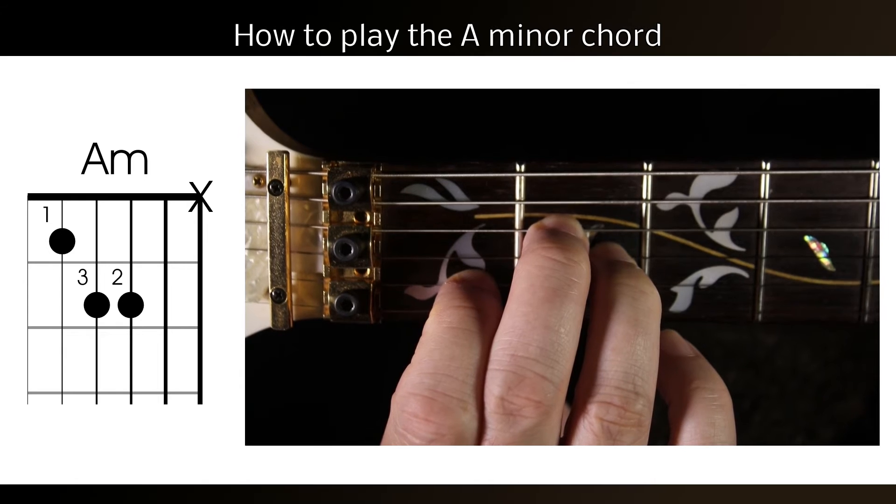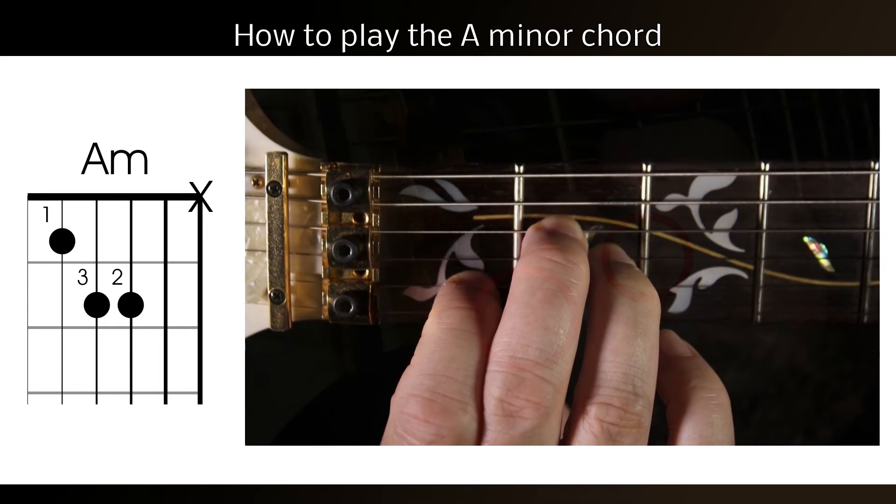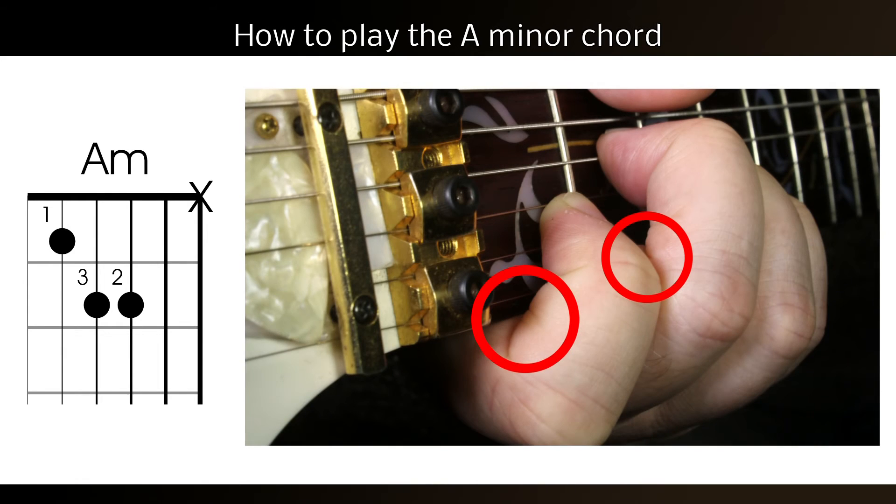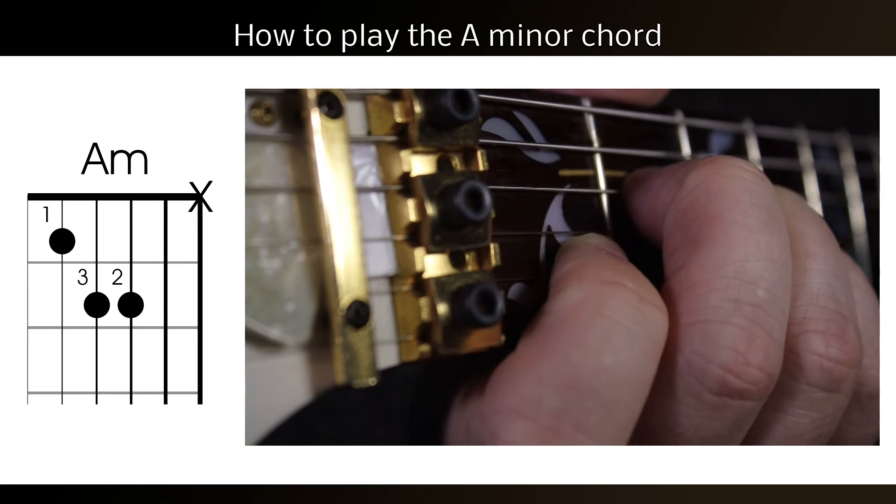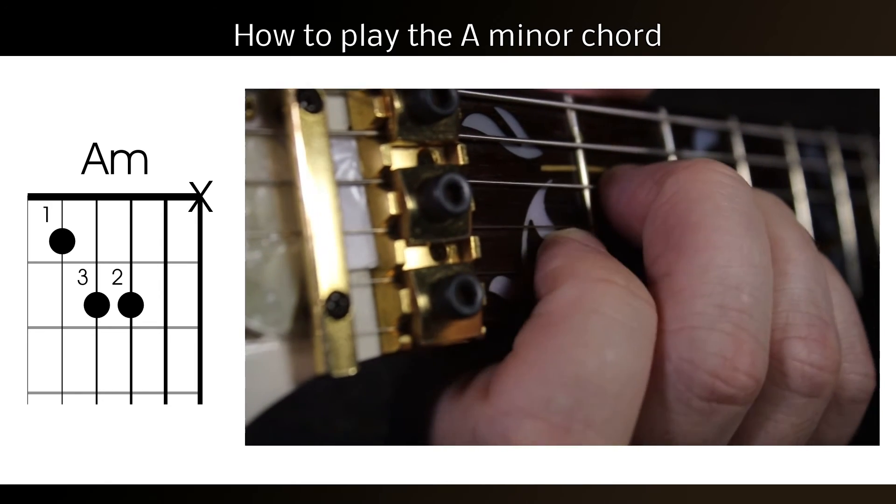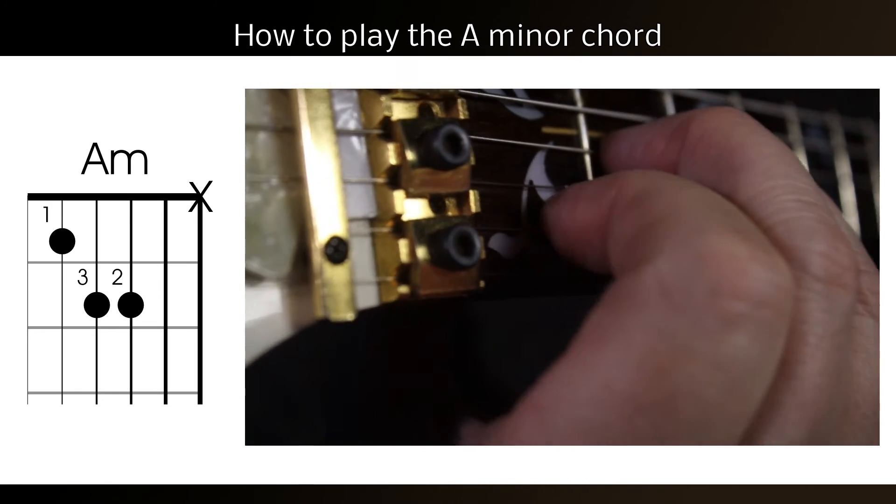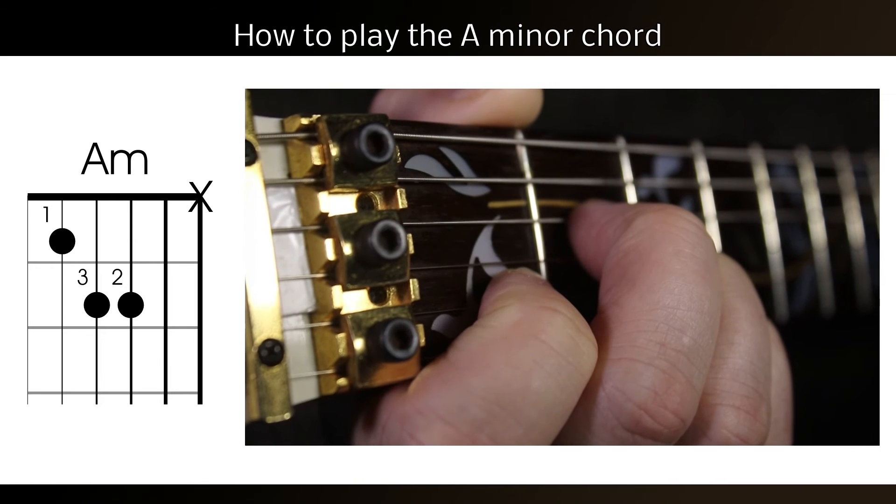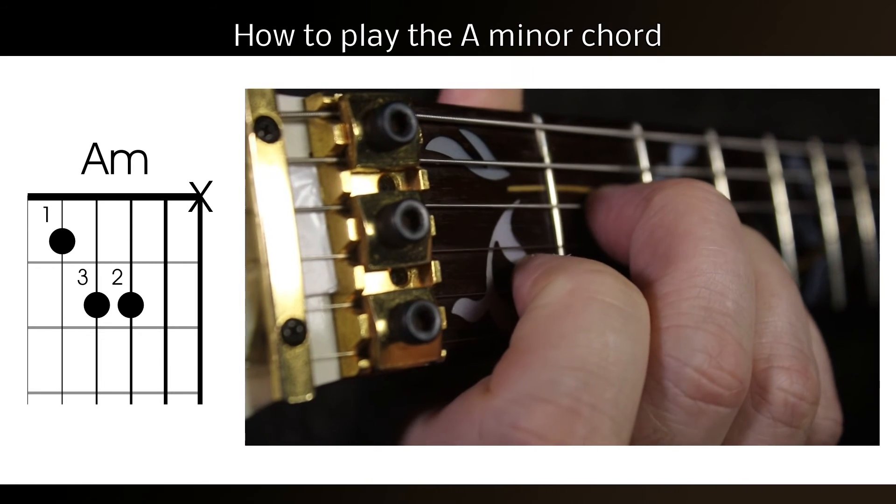If it's the top E string that's muted, more often than not this is caused by the side of the first finger touching the string as it curves round the back of the neck. You can avoid this again by bringing the thumb round towards the floor, which brings the fingers round and away from the side of the guitar.